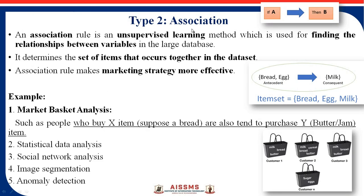The second type is association. Association is a rule of unsupervised learning that finds relationships between variables in a large dataset. It is generally used in market basket analysis — for example, if a person buys bread and eggs, they also tend to buy milk. Association is one of the most effective algorithms in marketing strategy and is also used for statistical data analysis, social network analysis, image segmentation, and anomaly detection. In short: if a person buys A, they also buy B — that is the concept of association.